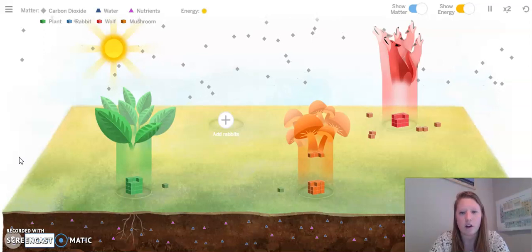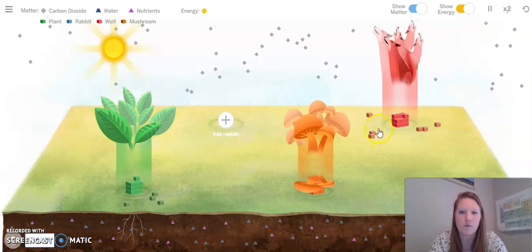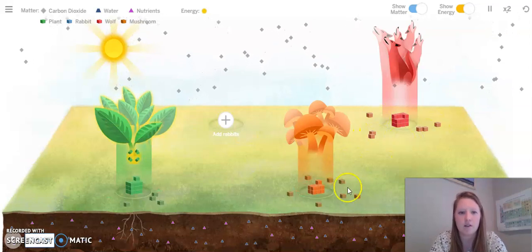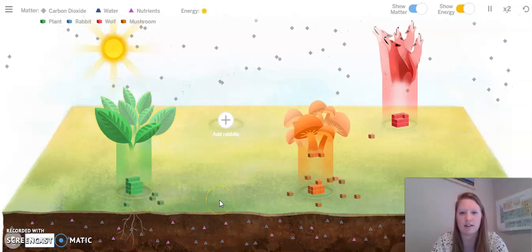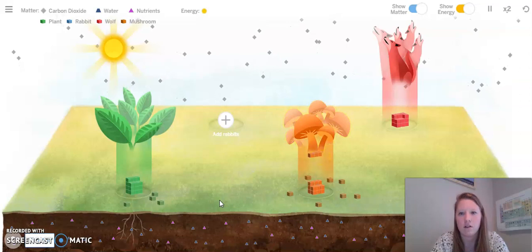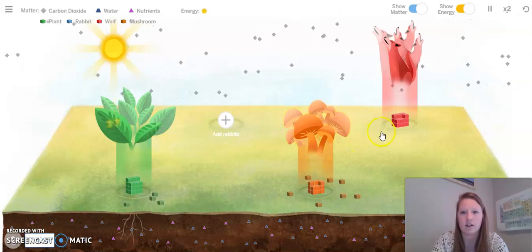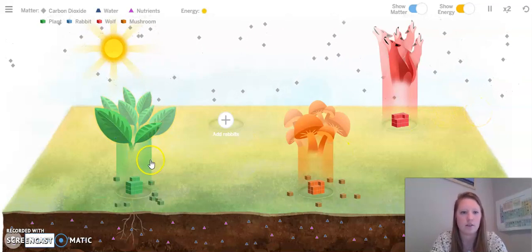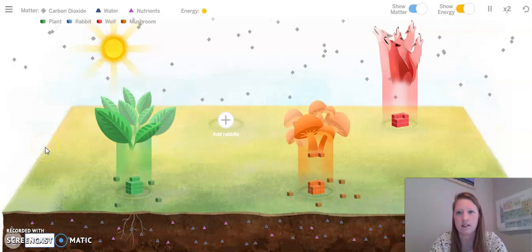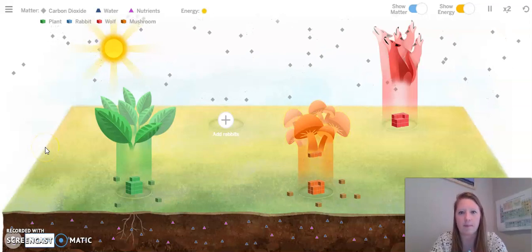As I'm watching, I notice that there's a couple different things happening. There is a lot of matter being given off by the wolves and the mushrooms. I can also see some given off by the plants. Now I notice that there's less matter being given off by the wolves and more to the mushrooms and the plants. Let's continue watching to see what happens.